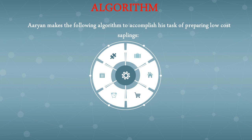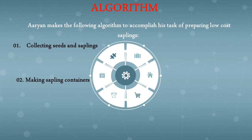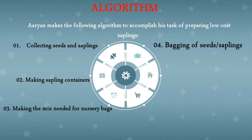Now let us see how Aryan creates the following algorithm to accomplish his task of preparing lower-cost saplings. The six steps are: First, collecting seeds and saplings. Second, making sapling containers. Third, making the mix needed for the nursery bags. Fourth, bagging of seeds and saplings. Fifth, nurturing of saplings. Sixth, planting. Now let us discuss each of these six steps individually.